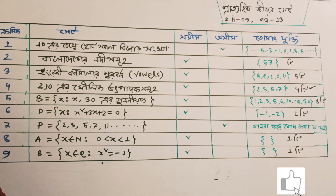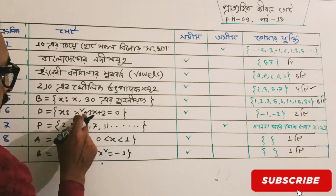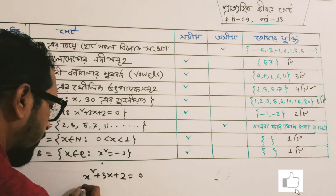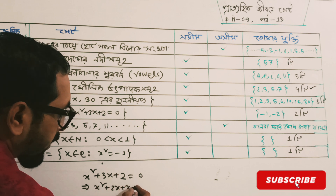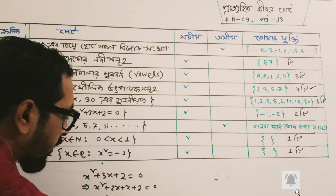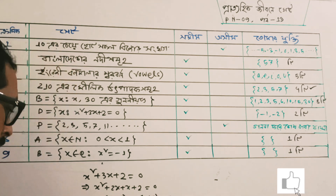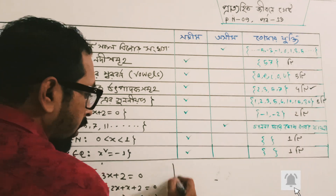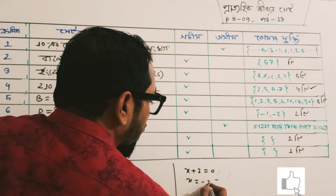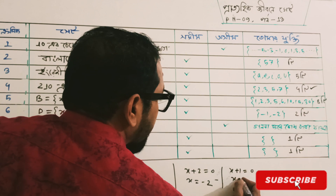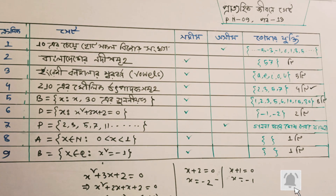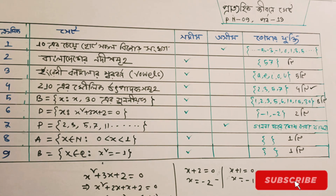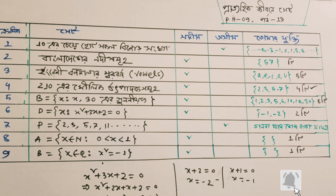I am going to show you: x² + 3x + 2 = 0. x is common, then x + 2 is common. x + 2 is equal to 0, so x is equal to minus 2. x + 1 is equal to 0, so x is equal to minus 1. So the two solutions are x = minus 2 and x = minus 1.